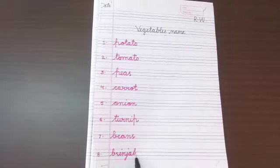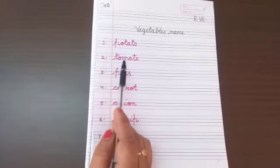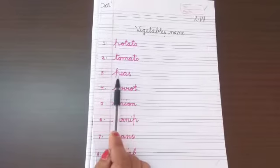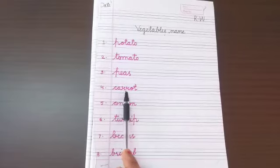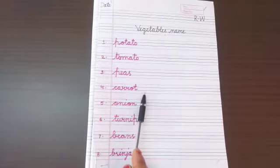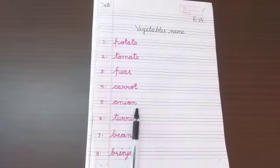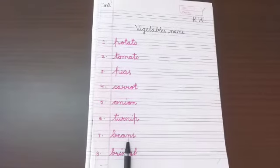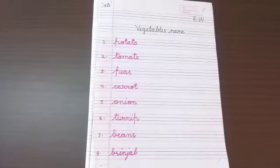Kids, एक बार और रिपीट करते हैं. Potato — Potato means आलू. Tomato — Tomato means टमाटर. Peas — Peas means मटर. Carrot — Carrot means गाजर. Onion — Onion means प्याज. Turnip — Turnip means शलजम. Beans — Beans means फली. And Brinjal — Brinjal means बैंगन.